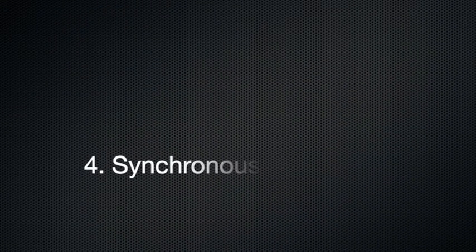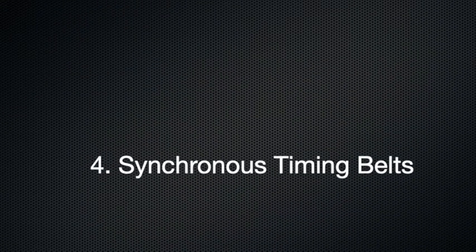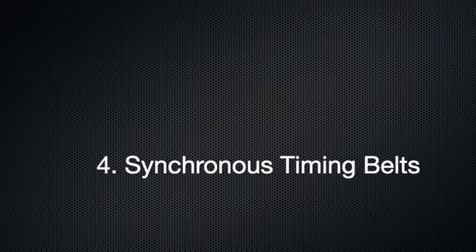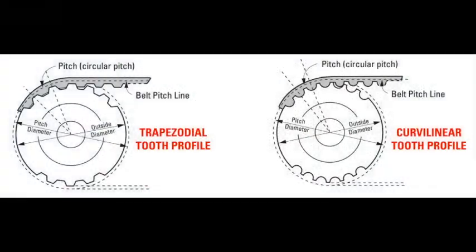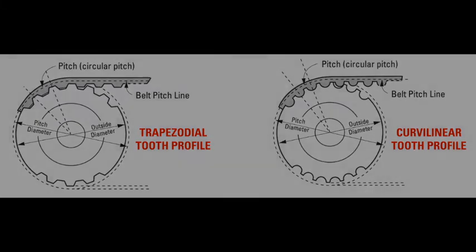The fourth type, synchronous timing belts, are the most efficient of the four main types of mechanical belts. Timing belts are different from other types of belts because they have teeth. The teeth do not allow the belts to slip, and therefore allow for the timing of parts.